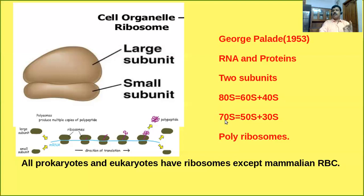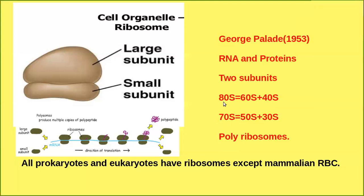70S ribosomes are seen in prokaryotic cells and in organelles like mitochondria and chloroplasts. During protein synthesis, many ribosomes attach to a single mRNA — this condition is called polyribosomes or polysomes.